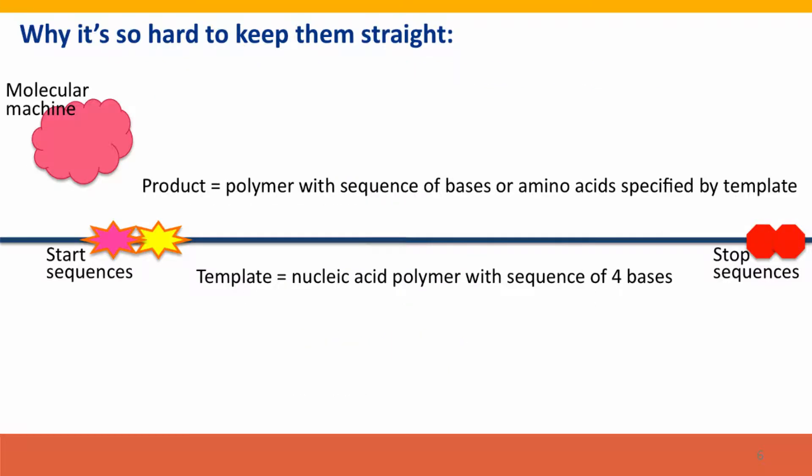So if they're so important, why is it so hard to keep them straight? Well, because they're also very, very similar. And I've got here a schematic diagram that would apply to any of these processes: DNA replication, transcription, or translation.